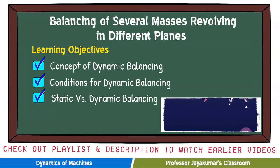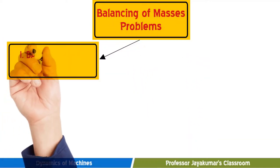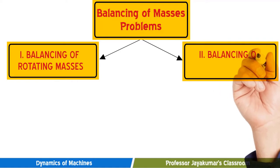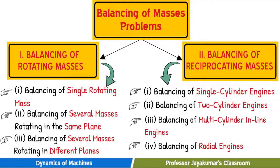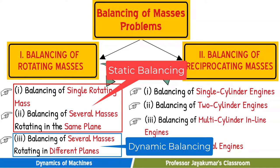So let's get started. As discussed already, balancing of masses problems can be broadly classified under two categories, namely balancing of rotating masses and balancing of reciprocating masses. Under balancing of rotating masses, we have balancing of a single rotating mass and balancing of several masses rotating in the same plane. These two types come under static balancing, which we have already covered. In this video, we will be discussing about balancing of several rotating masses in different planes, which is nothing but dynamic balancing.